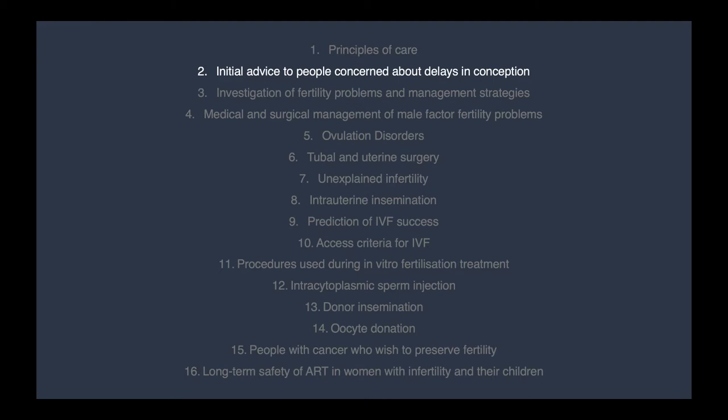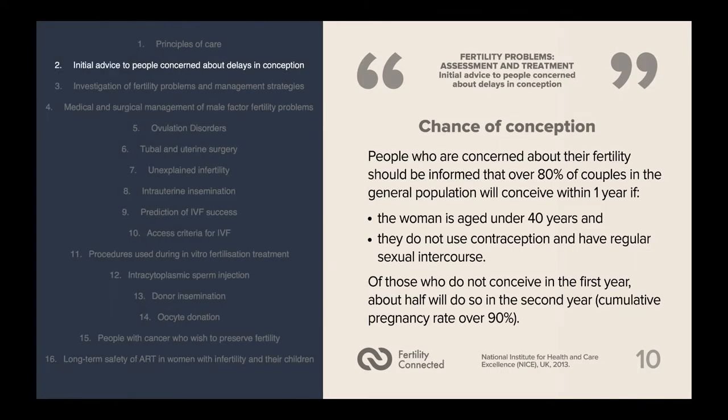Looking at the initial advice to people concerned about delays in conception: people should be informed that over 80% of couples in the general population will conceive within one year, if the woman is aged under 40 years, they do not use contraception, and have regular sexual intercourse. Of those who do not conceive in the first year, about half will do so in the second year, with a cumulative pregnancy rate over 90%.